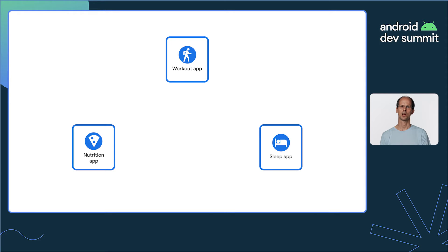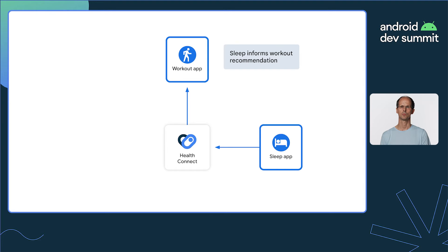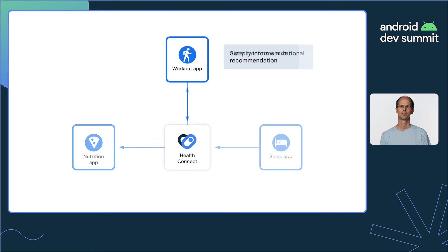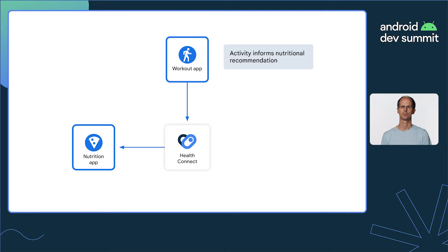Your workout app could consume data from HealthConnect, which has been supplied by the sleep app. Perhaps if the user has had a poor night's sleep, your workout app could make different recommendations for exercise that day. Equally, by feeding data to HealthConnect from your app with the user's consent, the user can realize benefits in other apps they may use. For example, the user may also be using a nutrition app, which could make different recommendations depending on their levels of activity.